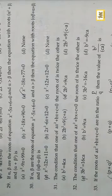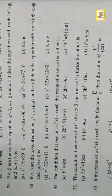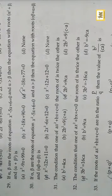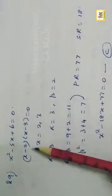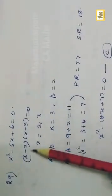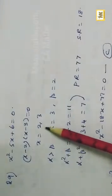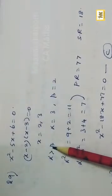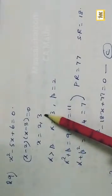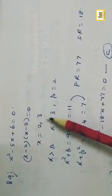Question number 29: alpha and beta are roots of x² - 5x + 6 = 0, alpha > beta. Find the equation with roots alpha²+beta and alpha+beta². Factorising gives x = 2, 3, so alpha = 3, beta = 2.